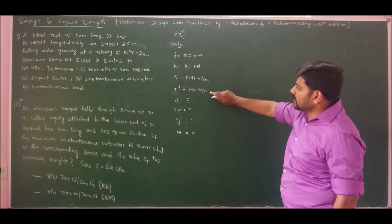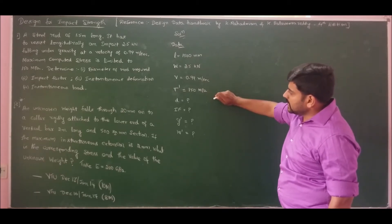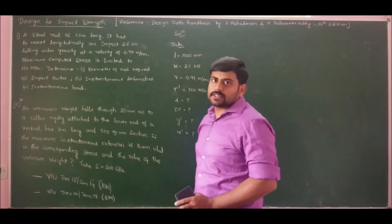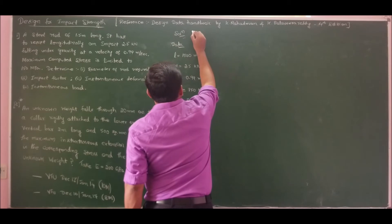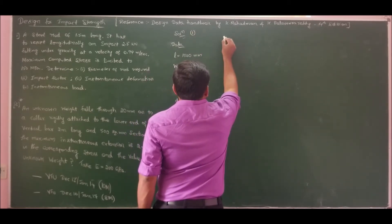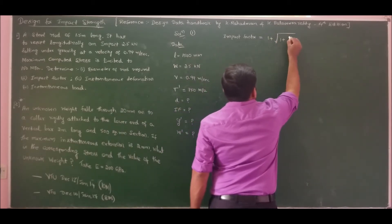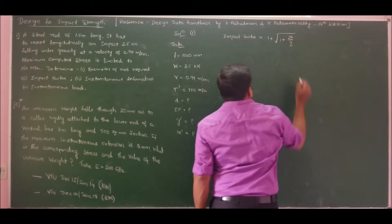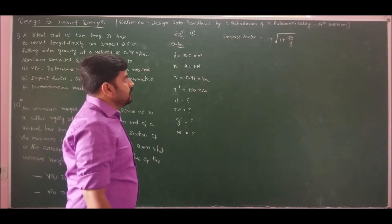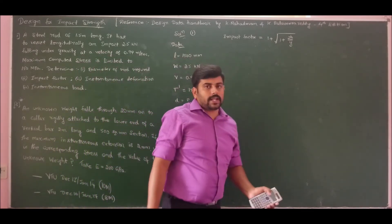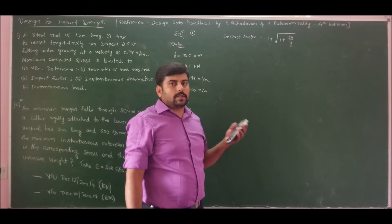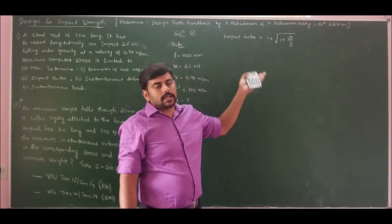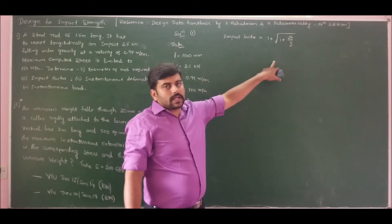Since we know the value of impact stress, using that expression we can find one unknown quantity. But for any instantaneous quantities, we should know the impact factor first. Impact factor is given by 1 plus the square root of 1 plus 2H divided by static deflection. For static deformation it is FL by AE for axial impact conditions. This impact factor equation is available in the design data handbook as equation 2.26 and variants 2.26b, 2.26c, etc.